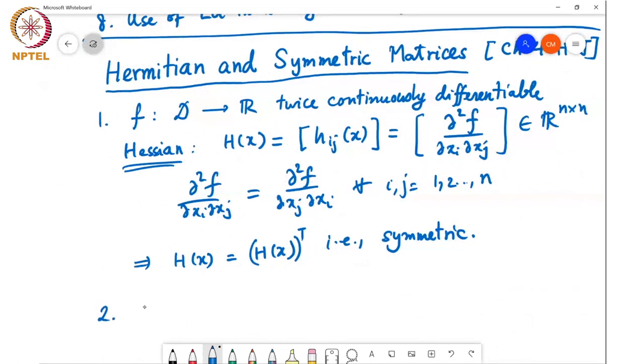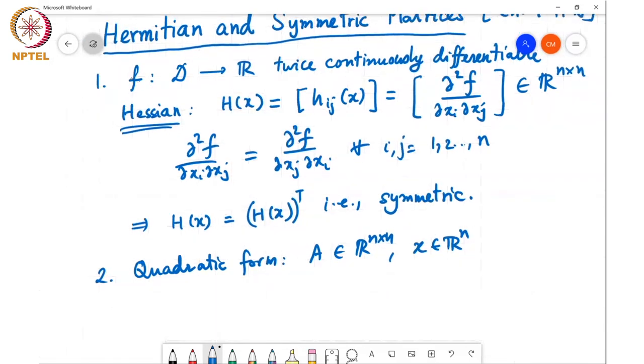Similarly, if we look at what is known as the quadratic form. Suppose we're given A in ℝ^(n×n) and x in ℝ^n. Then consider Q(x), which could be one example of this function f. Q(x) equals x^T A x.